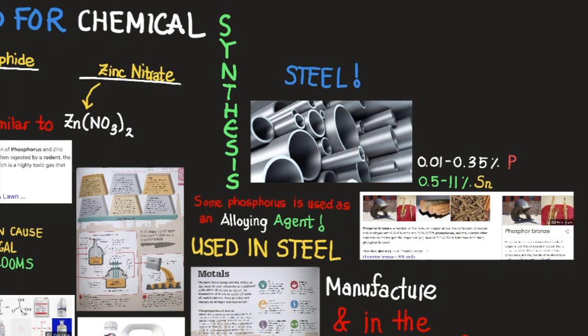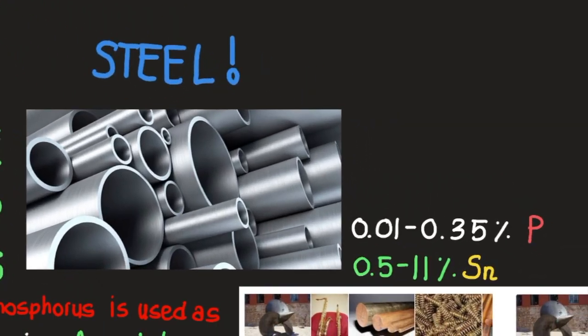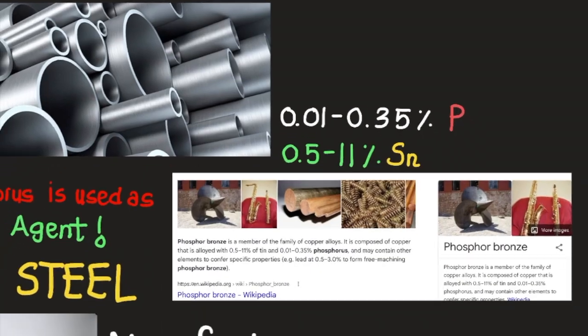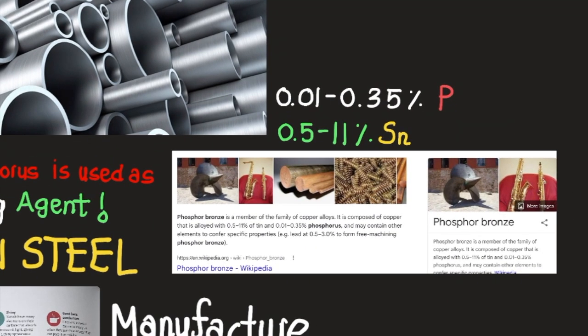In the same way that carbon allows things to have structure, phosphorus also allows things to have structure. That's why the body uses it for bones and teeth, and it's used for the synthesis of various alloys. For example, phosphor bronze is a combination of phosphorus and tin. Normally, bronze is a combination of tin and copper, but phosphor bronze is a combination of tin and phosphorus — so the phosphorus replaces the copper.